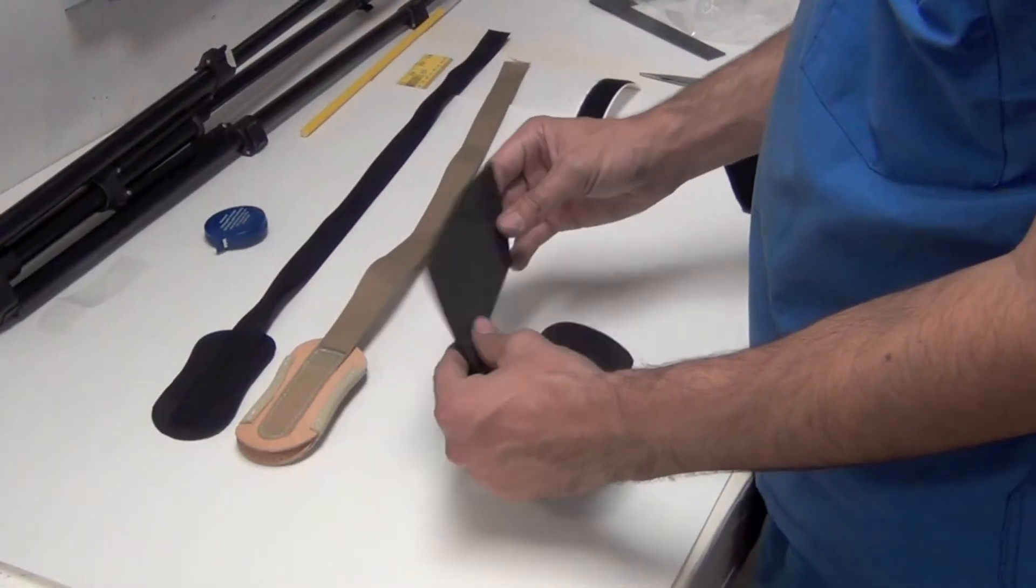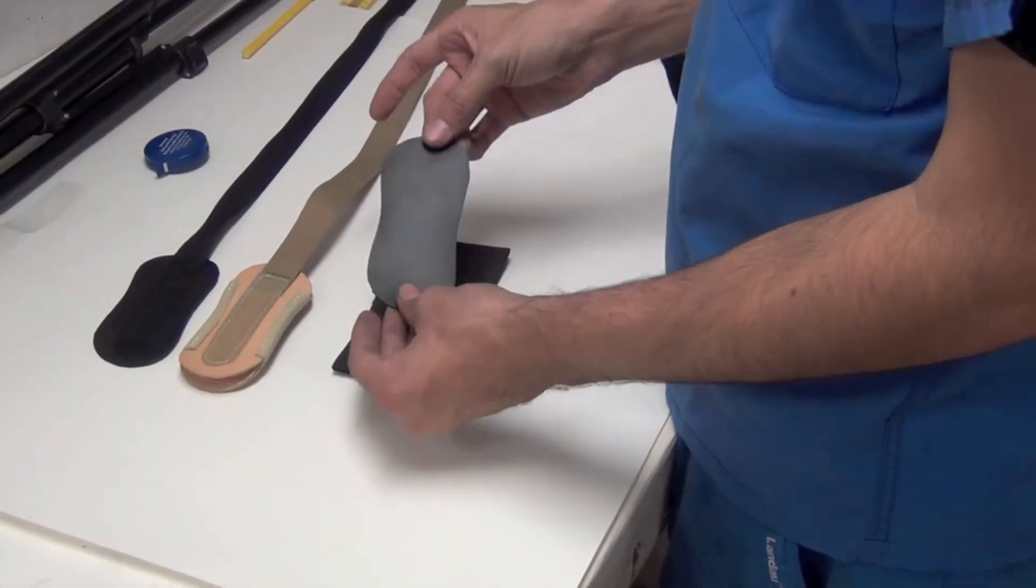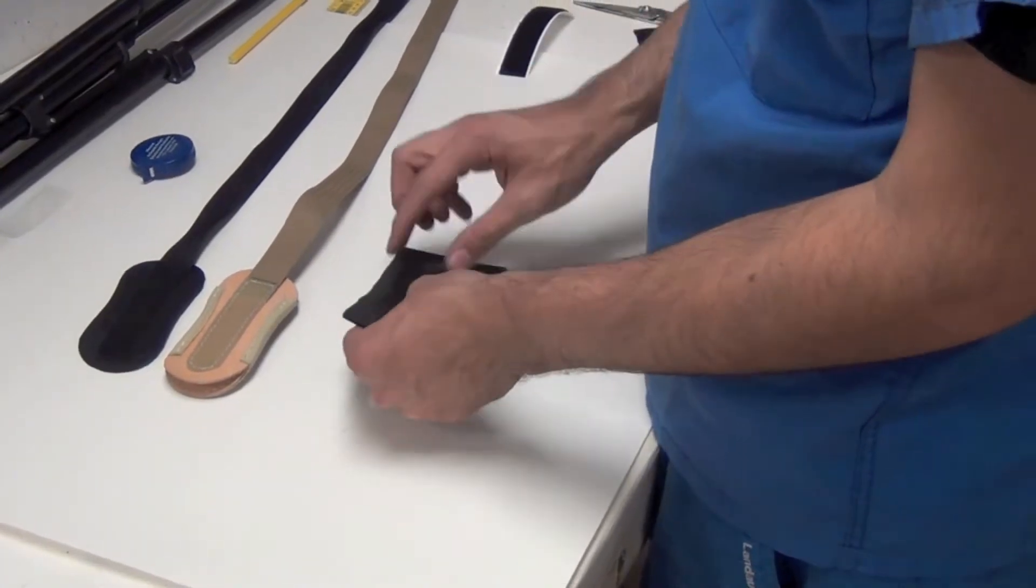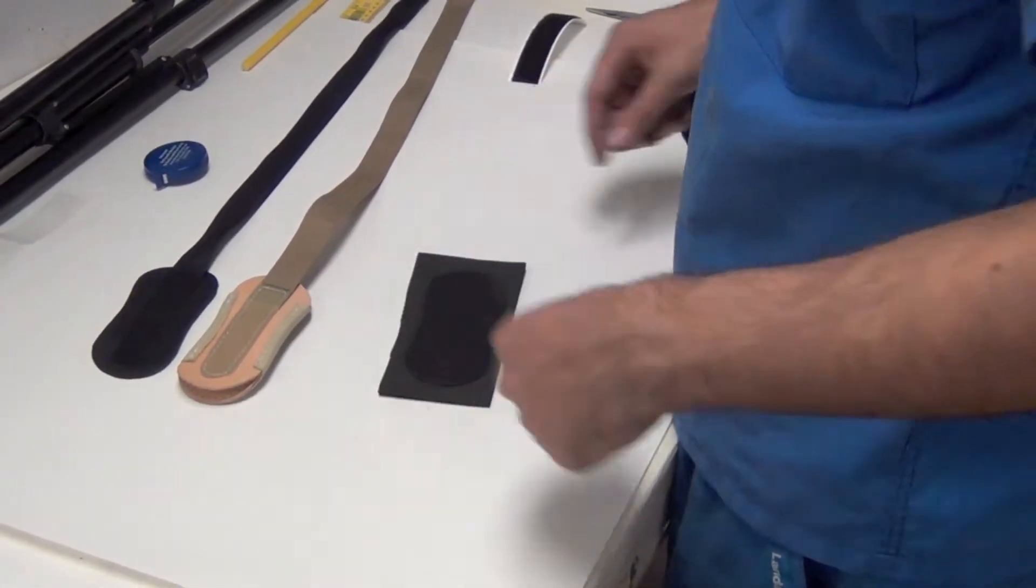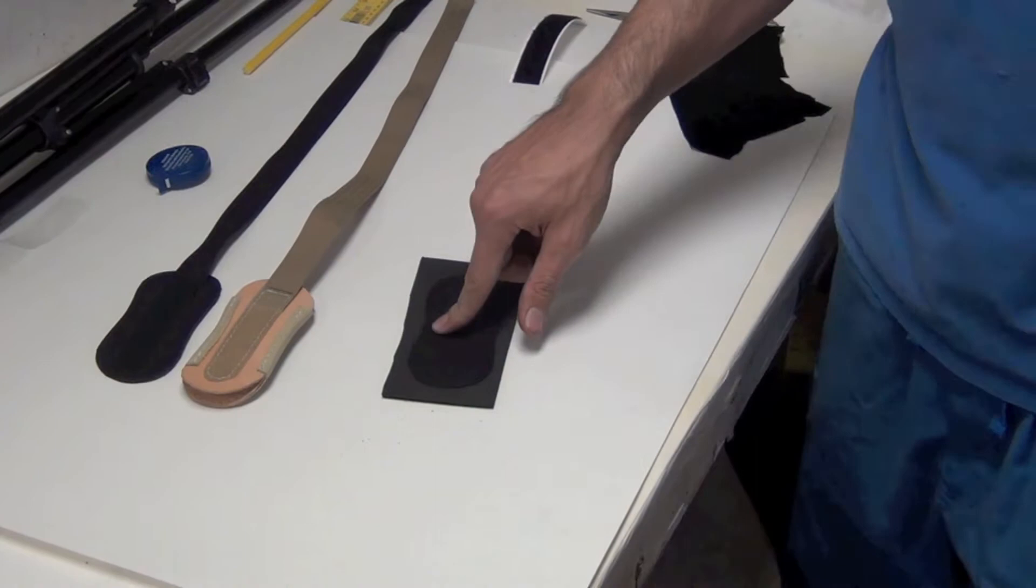I'm going to take this foam, and I'm going to glue this other pattern, or this other leather piece, just straight onto that, using some barge cement.